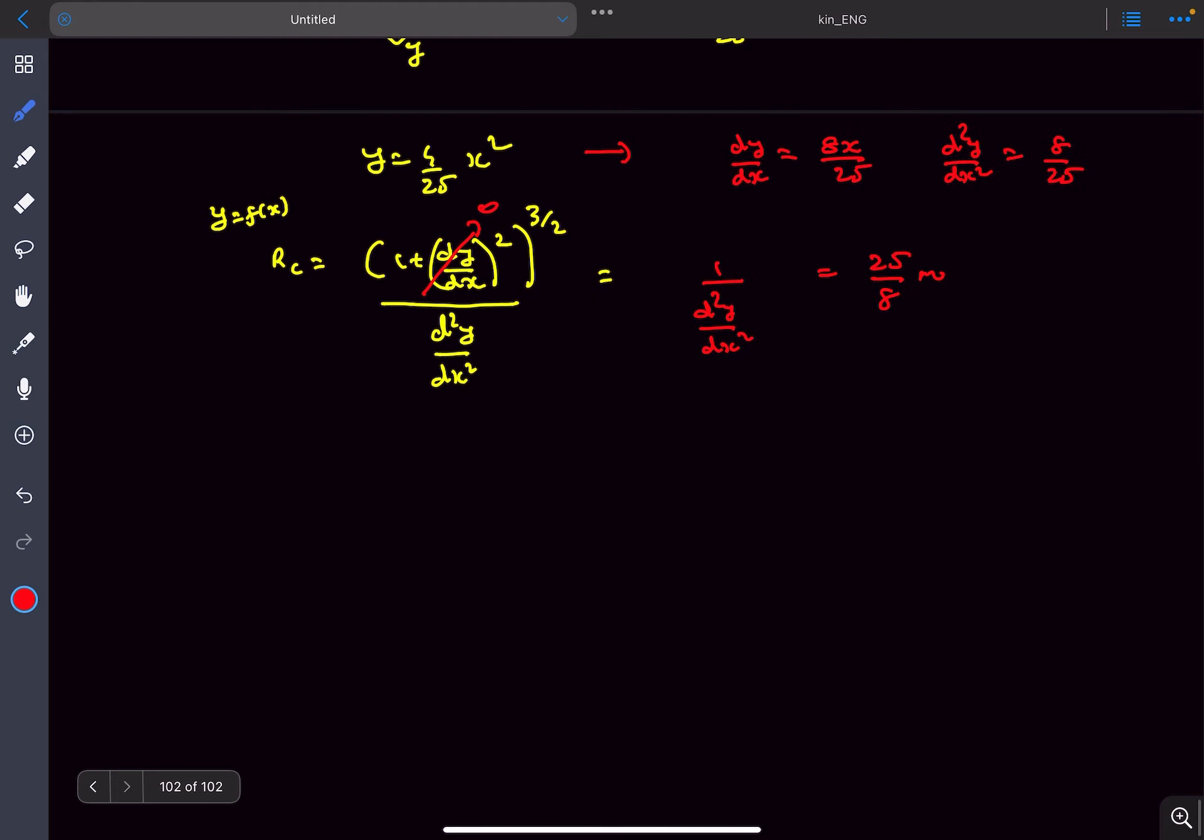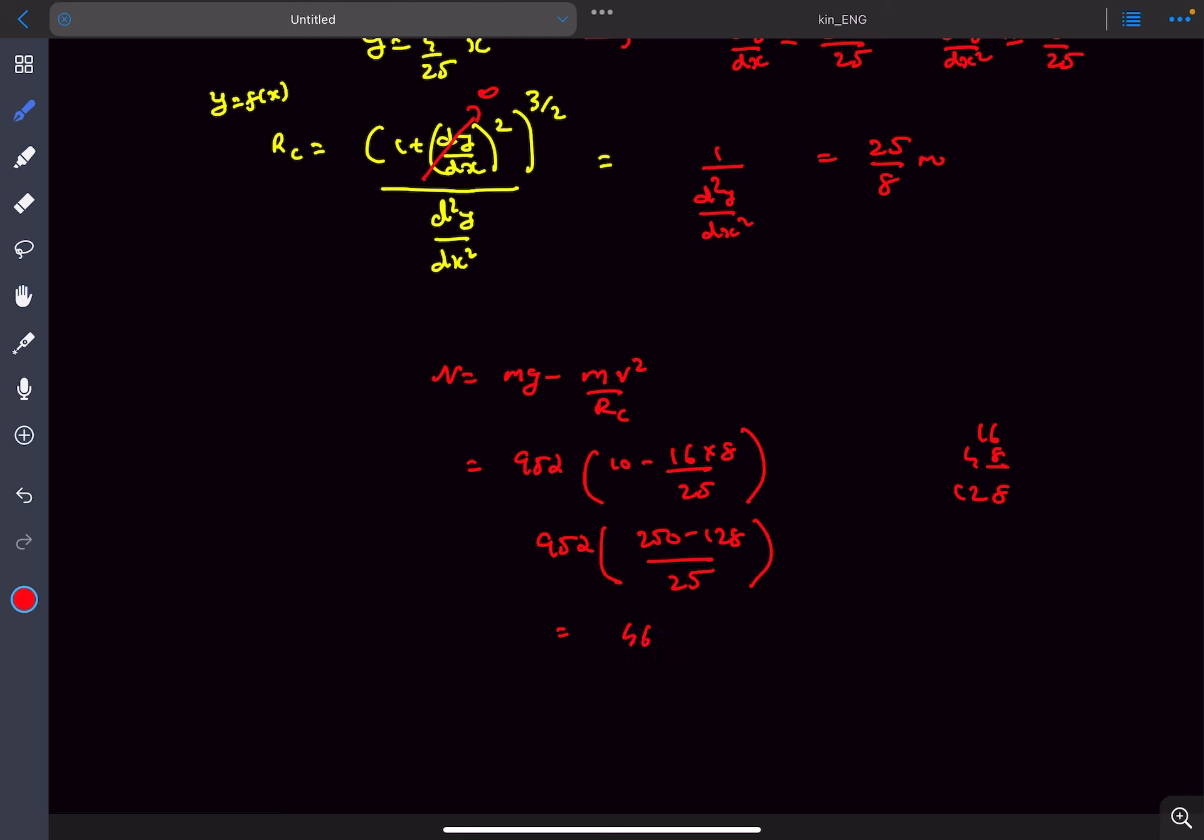Now if we substitute it into our equation of motion, into our force equation, we'll get the normal reaction to be mg minus mv squared divided by rc. So you'll get the answer 4645.76 newton.